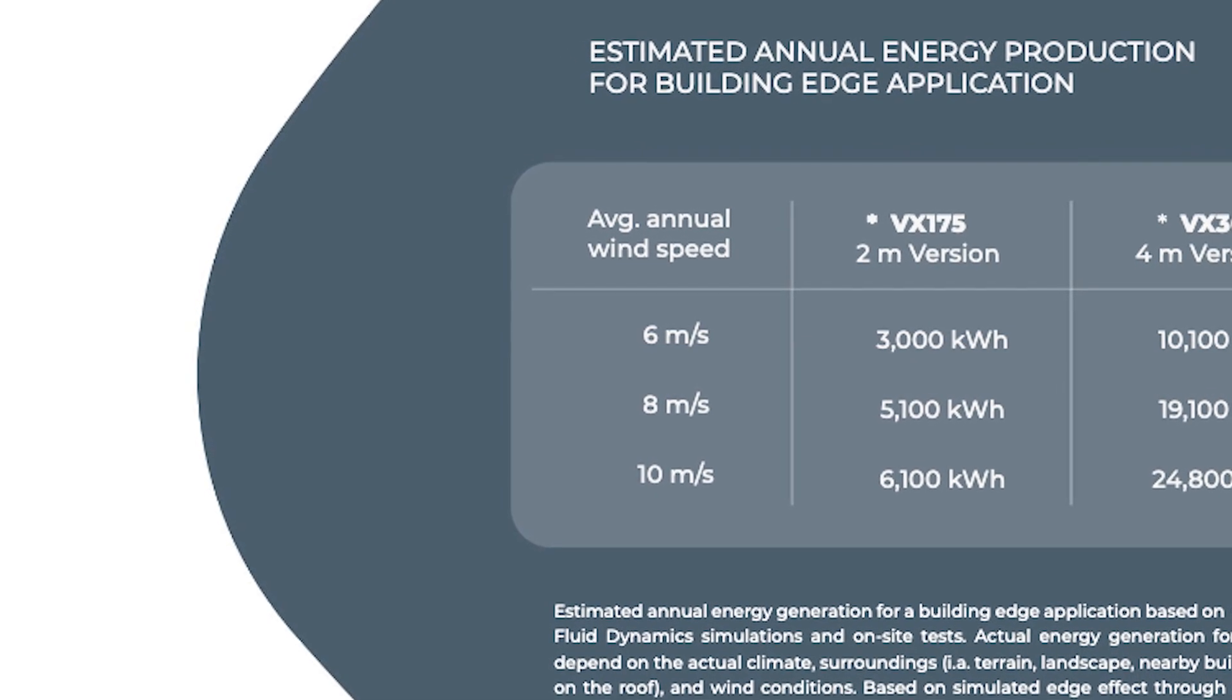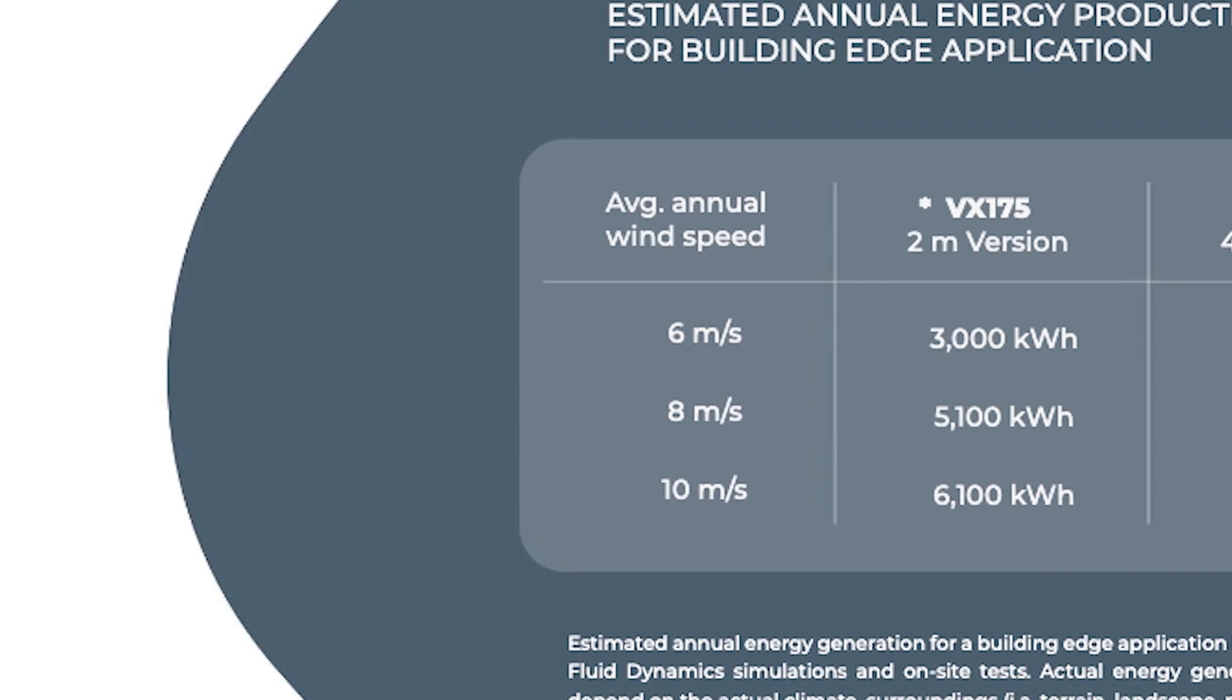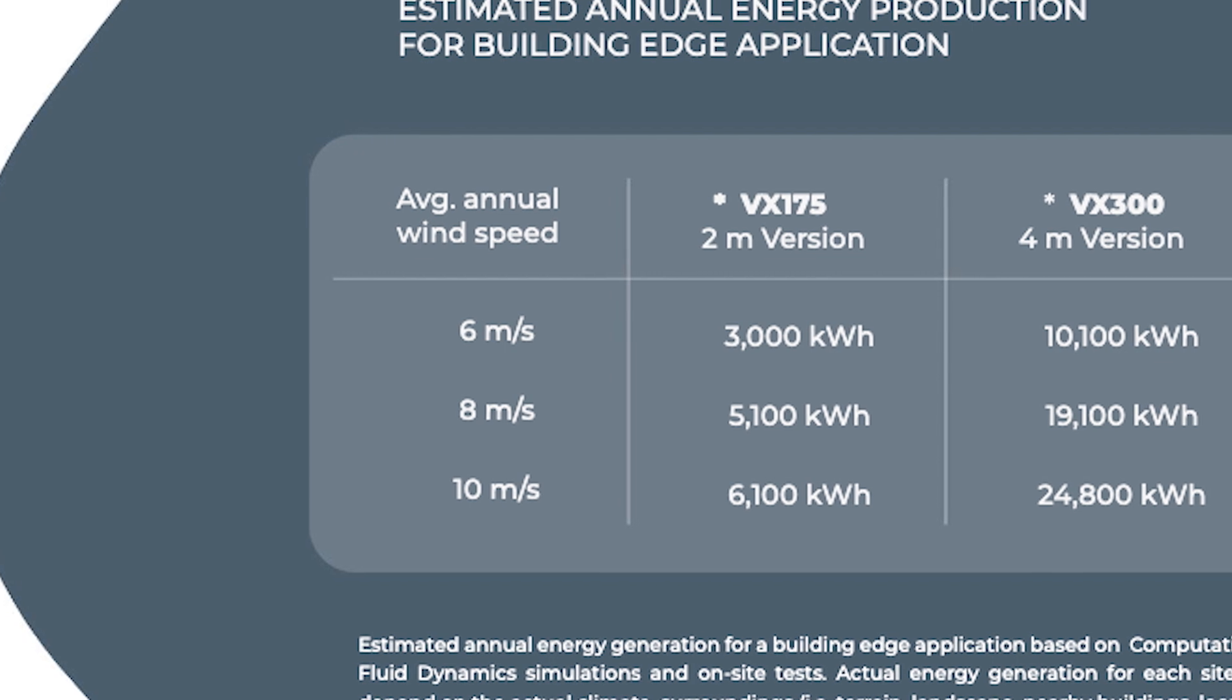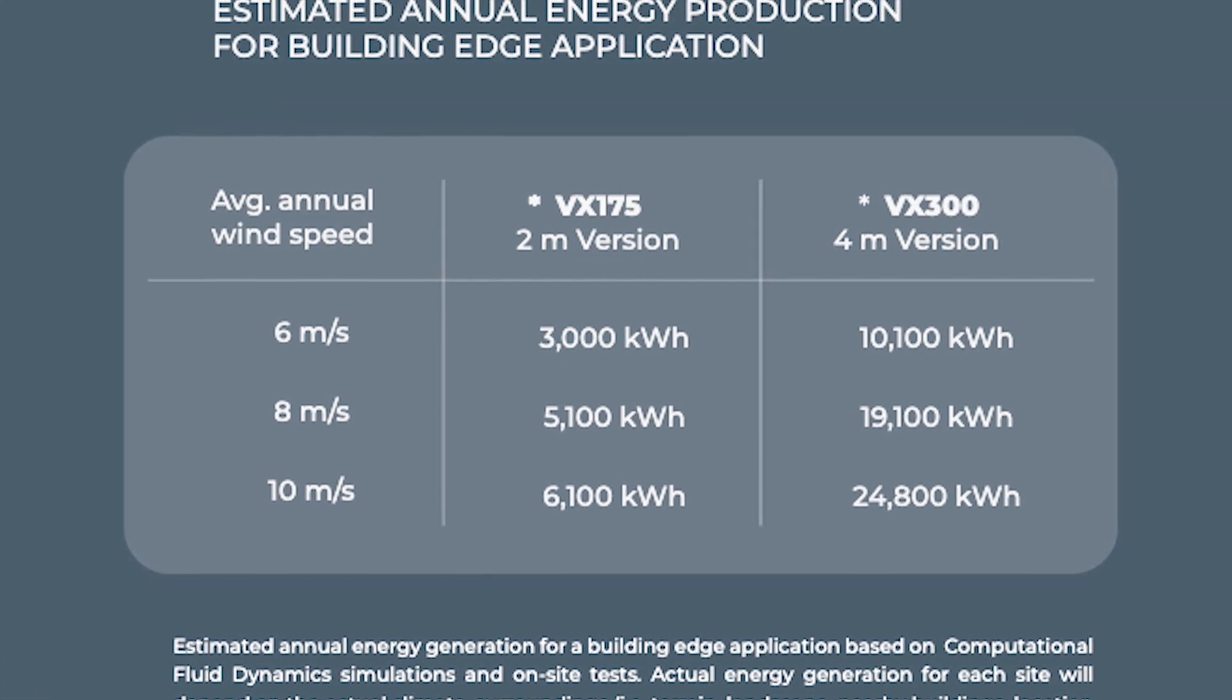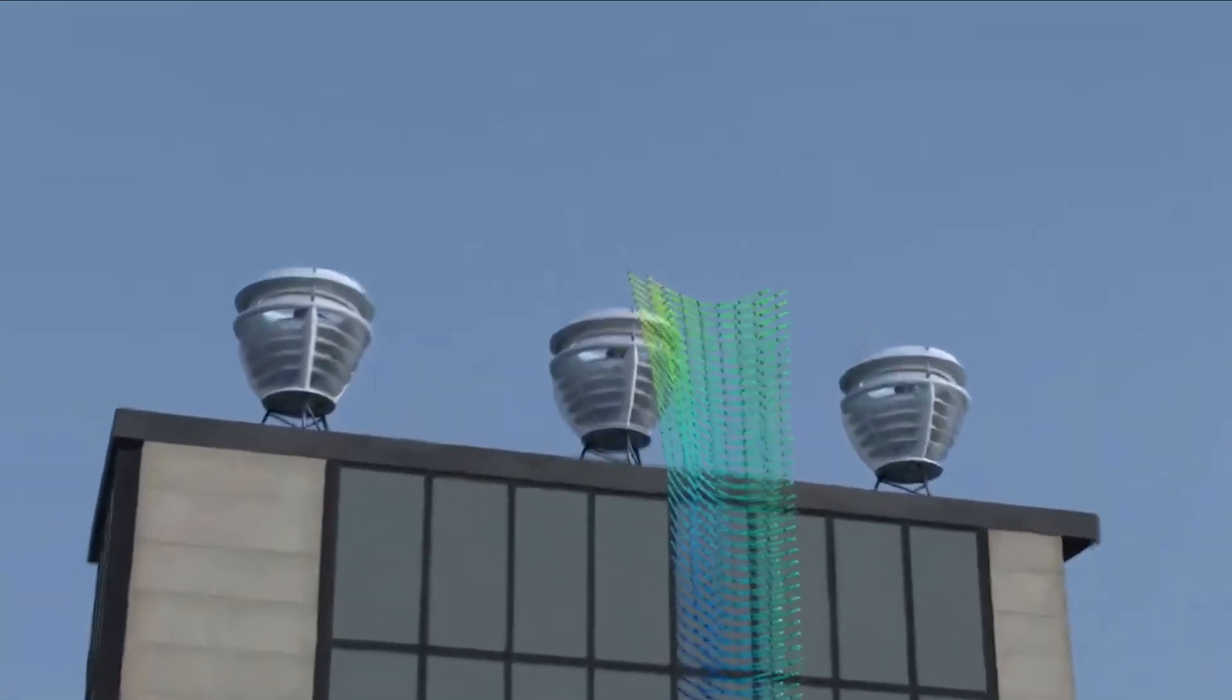Looking ahead, the VX300 turbine is projected to offer even greater potential. At 6 meters per second, the VX300 is expected to generate 10,600 kilowatt hours, and at 6.5 meters per second, it could produce 13,000 kilowatt hours.